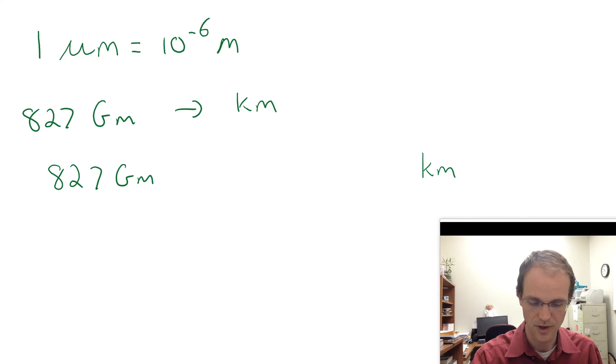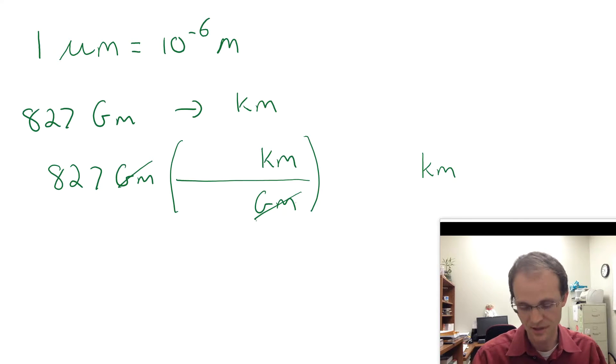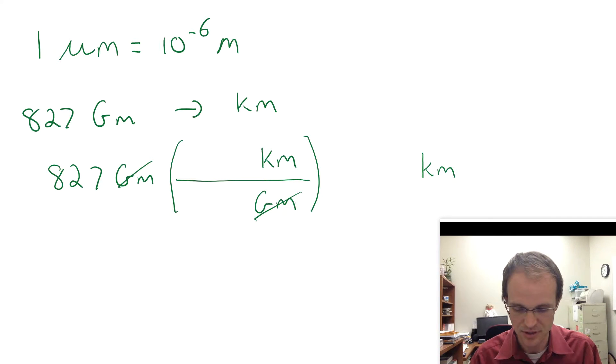So remember, we always put what we're starting with on the left, what we're ending with on the right over there. We put a set of parentheses to say, hey, I'm going to put a conversion there. We need the kilometers on top because it's on the top in the end. We need the gigameters on the bottom so it can cancel like that. And if you really look and say, do I know the conversion between gigameters and kilometers? And the answer is no. I could calculate it, but let's go ahead and calculate it in a more methodical way using the two-step method.